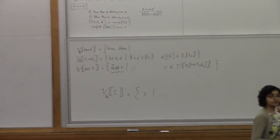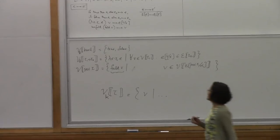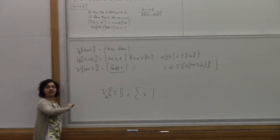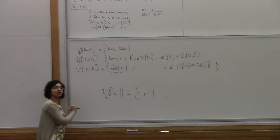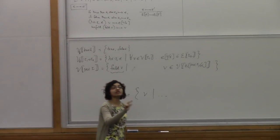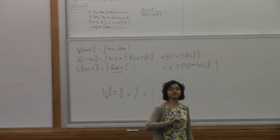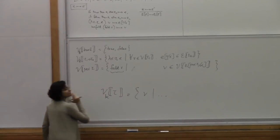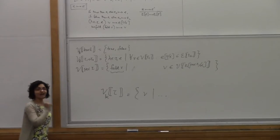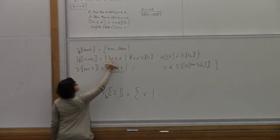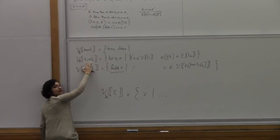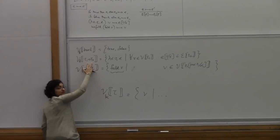We go back and index our logical relation with some natural number k — k will always be a natural number. For Bool, the values that belong to type Bool for k steps are still true and false; we don't care what k is. Functions are harder: when does a lambda look like it has type tau1 arrow tau2 for up to k steps?